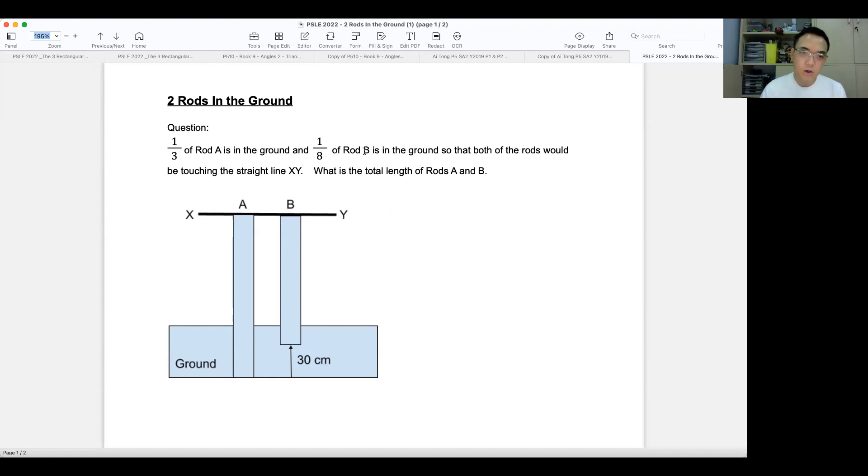The first thing you need to take note of here are the keywords. As usual, most questions or all questions, you need to have your keywords underlined first, even if it's MCQ. So this 1/3 here represents rod A, the 1/8 here represents rod B. In the same way, one is the part that is in the ground, and the one here is the part that is in the ground. Both of it from 1/3 and from 1/8, both the ones are the parts that are in the ground.